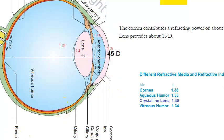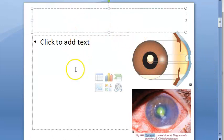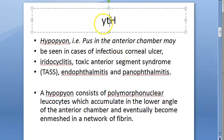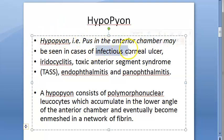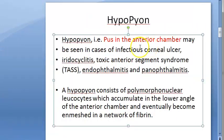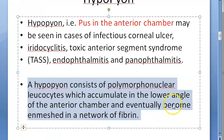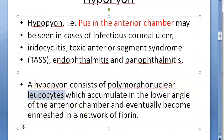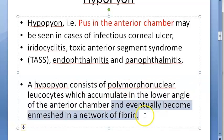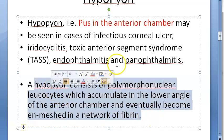This can happen in a lot of situations. So the definition: hypopion is pus in the anterior chamber of the eye. It may be seen in infectious cases and many other situations. A hypopion consists of polymorphonuclear leukocytes — that means neutrophils — which accumulate in the lower angle of the anterior chamber. Eventually they become enmeshed in a network of fibrin.